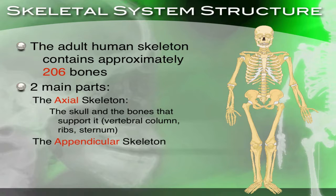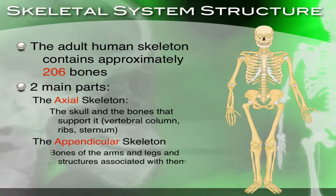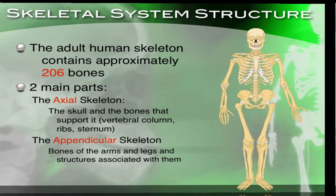And the appendicular skeleton — that would be the bones of the arms and legs and structures associated with them. That would include the carpals and metacarpals, phalanges, humerus, radius, ulna, femur, tibia, and fibula. Those would be part of the appendicular skeleton, and the other one was the axial skeleton.